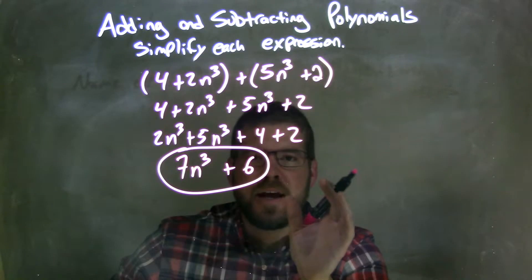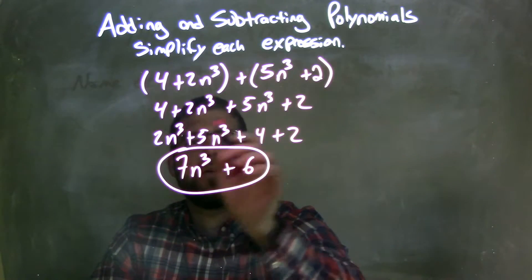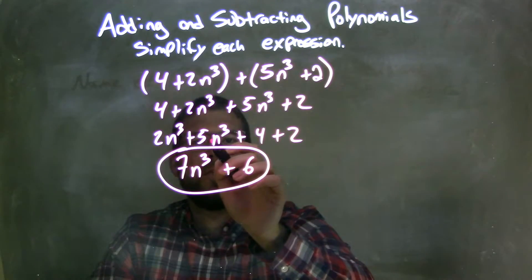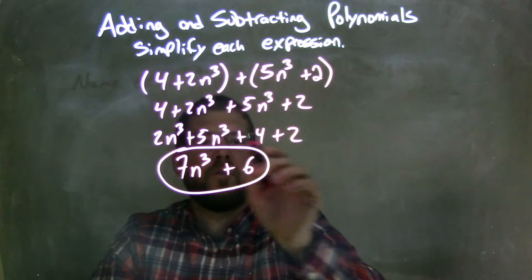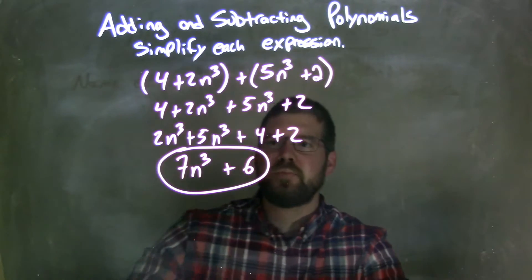Then I rearranged my like terms together and put them at highest degrees first. So I had 2n to the 3rd first, that one there, 5n to the 3rd right there, then the 4, then the 2. All four terms got transferred down. Make sure you don't forget them. Don't leave anyone behind.